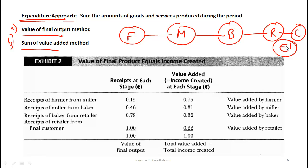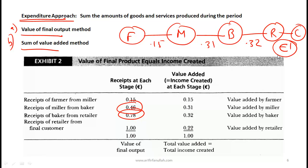The other way is to look at value added along the chain. The farmer sells to the miller for £0.15 — value added: £0.15. The miller sells to the baker for £0.46 — value added: £0.31. The miller sells to the retailer for £0.78 — value added: £0.32. The retailer sells to the consumer — value added: £0.22. Adding all the value added figures brings you to £1.00, the same result.